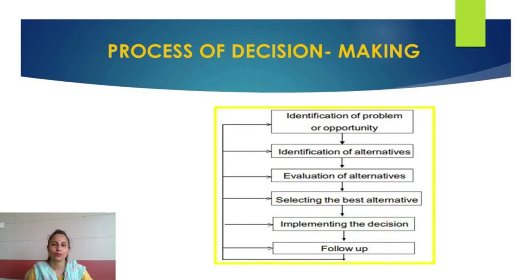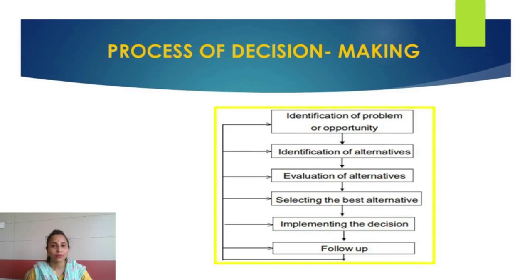The next step is evaluation of the alternatives, where the selected alternatives are analyzed in detail with the motive of choosing the most viable one. Then comes selecting the best alternative — evaluation helps the manager consider consequences and choose the best option. After that is implementing the decision, ensuring effective implementation to solve the problem or capture the opportunity within the organization.